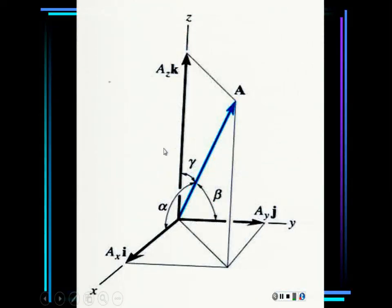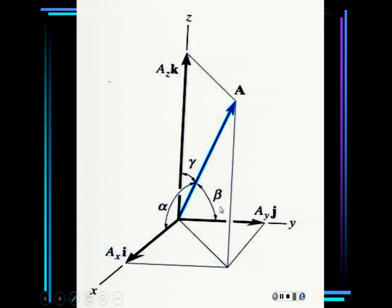Alpha is the angle that the vector makes with the x-axis, beta with the y-axis, and gamma with the z-axis. I suggest going to a corner of the classroom and imagining the vector coming out from the corner, then measuring those angles. If you look at the right-triangle drawings, you can see why cosine of alpha equals ax over the magnitude — this is adjacent over hypotenuse.